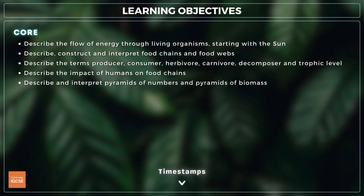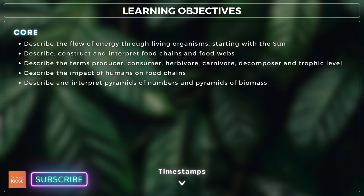For this lesson, you need to describe the flow of energy through living organisms, construct and interpret food chains and food webs, describe the terms producer, consumer, herbivore, carnivore, decomposer, and trophic level, describe the impact of humans on food chains, and describe and interpret pyramids of numbers and pyramids of biomass.